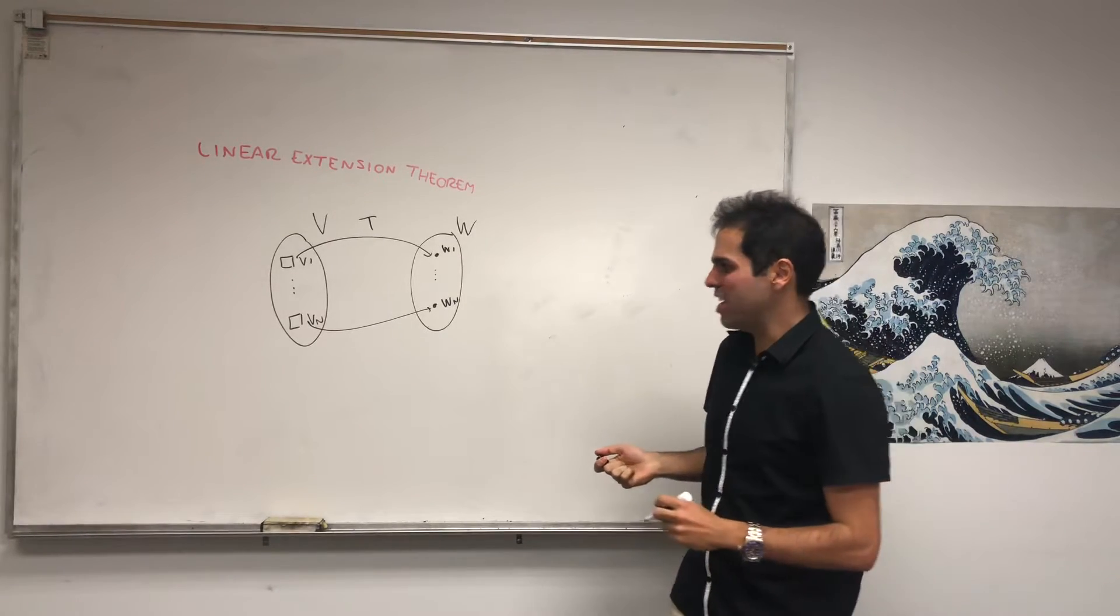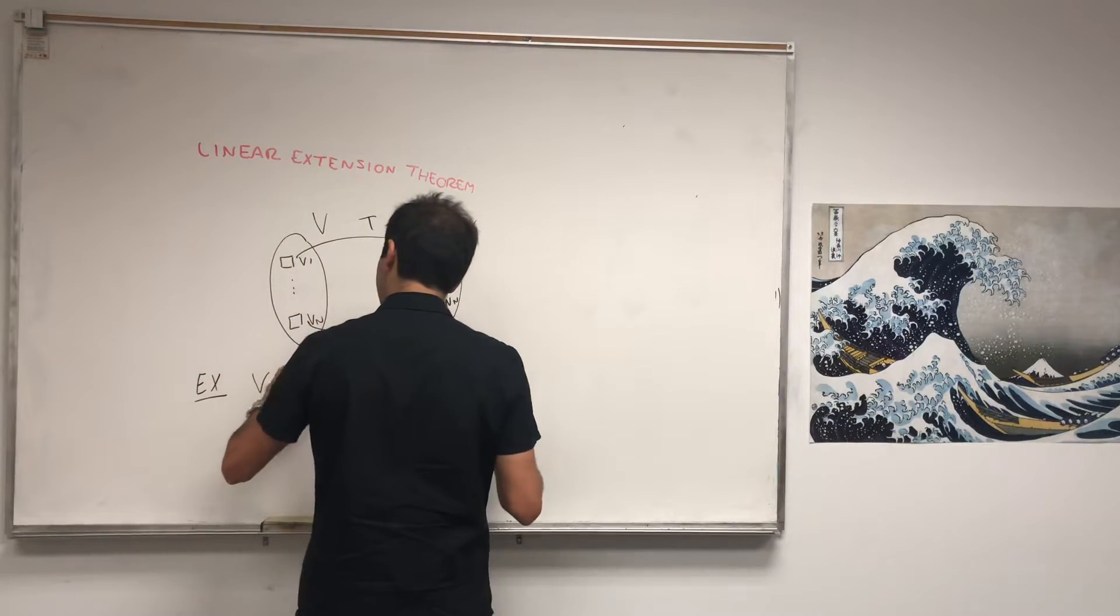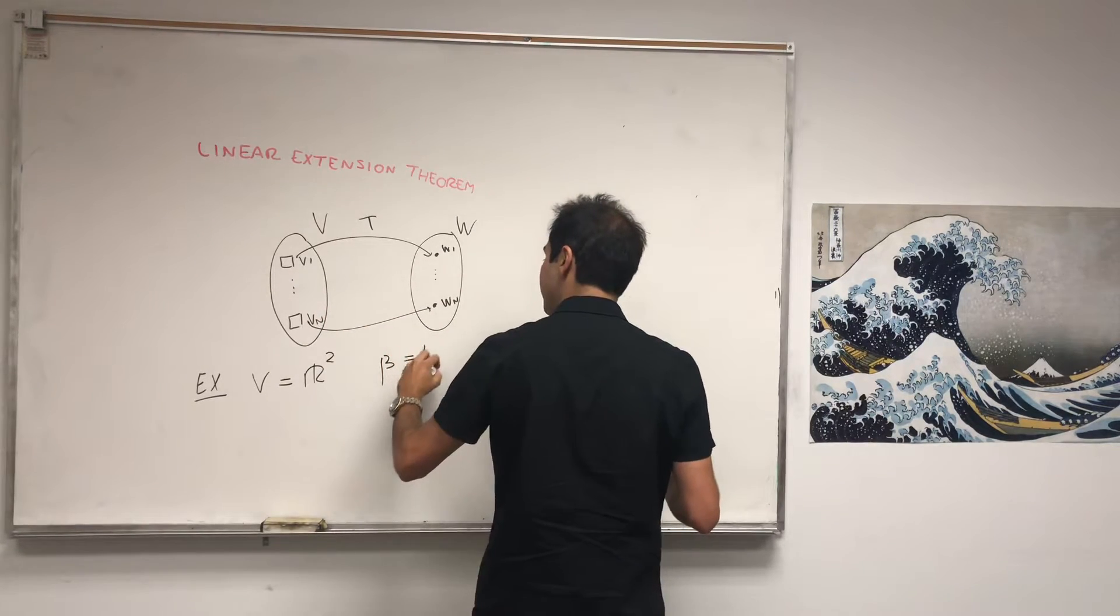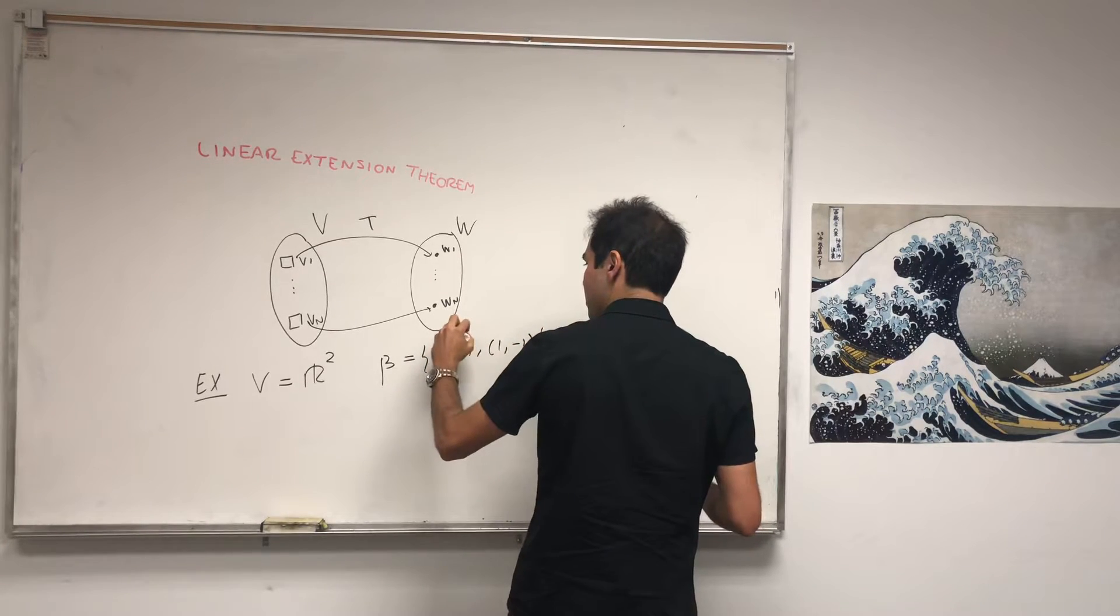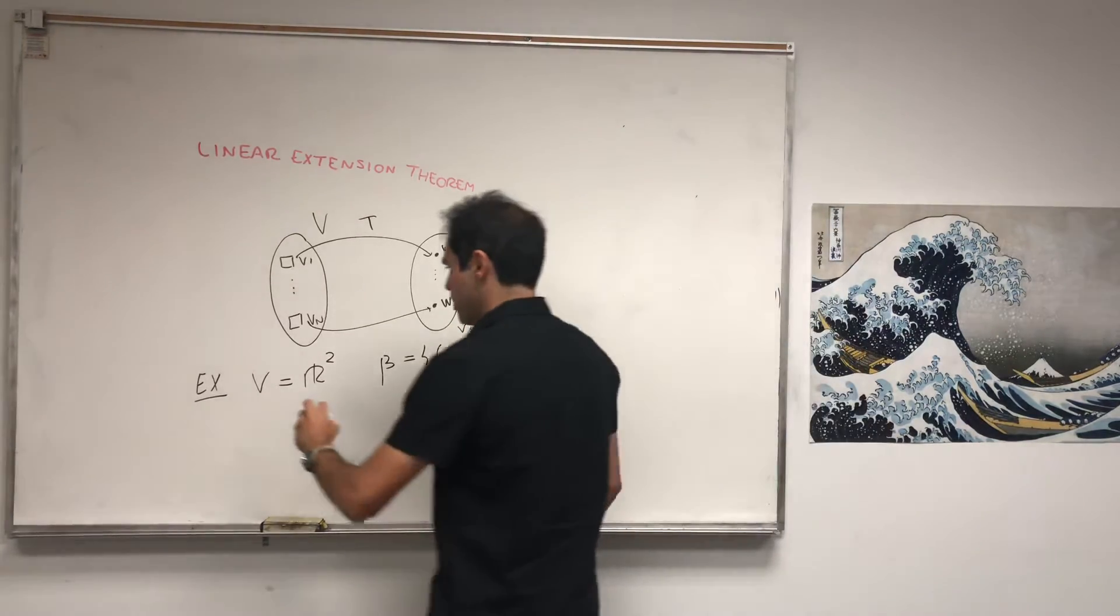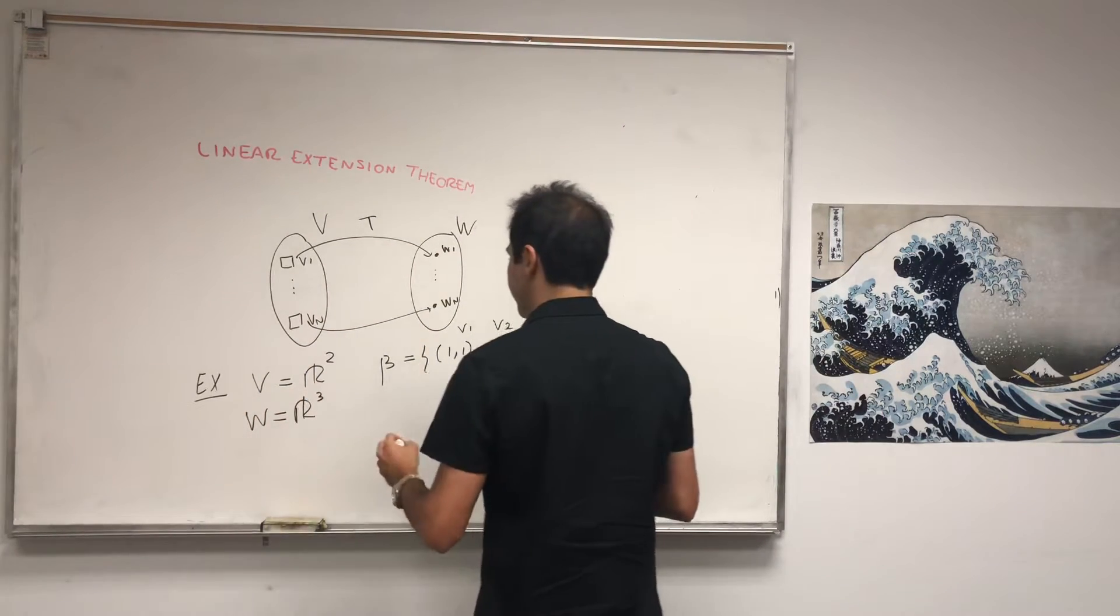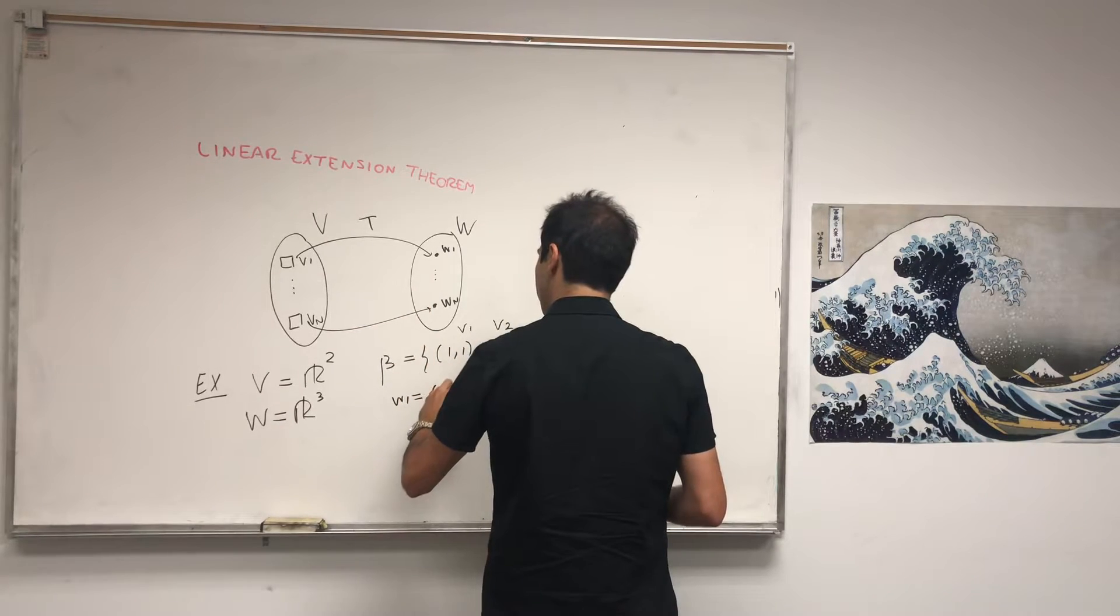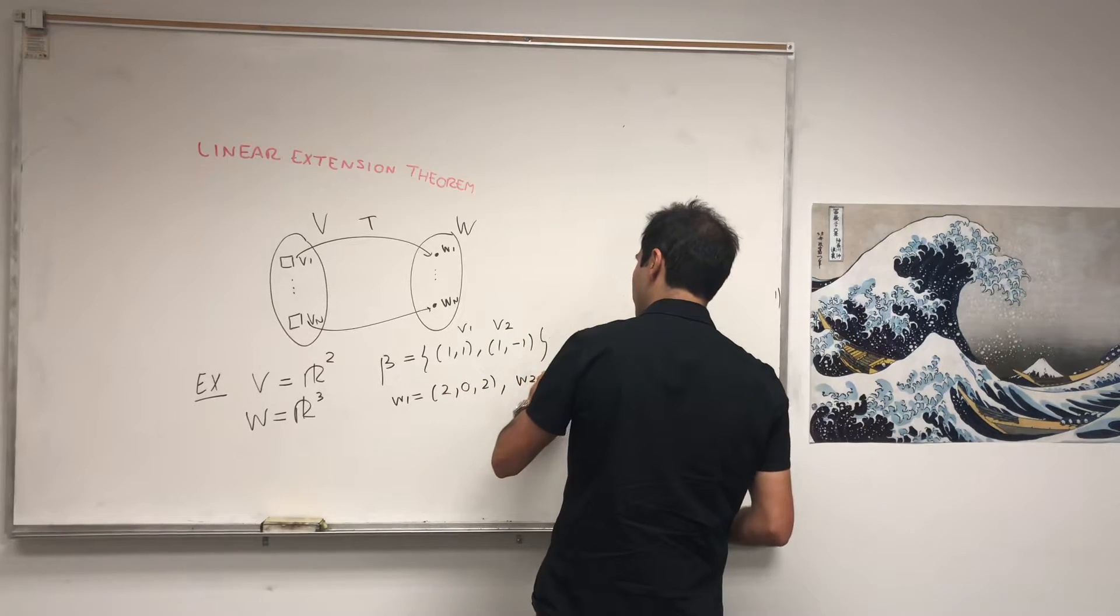And I will state the theorem in a second, but let me first illustrate it also with an example. Suppose V is R2, and then your basis is just the basis in this case, (1,1), (1,-1). So this is our V1 and this is our V2, and let's say W is R3, and your set here, W1, W2 is just, let's say, (2,0,2), and W2, which is, let's say, (4,0,4).